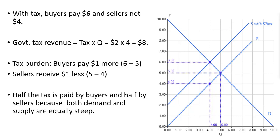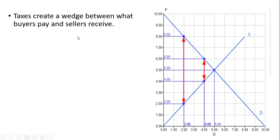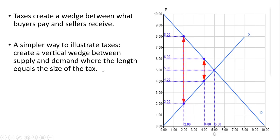Taxes create a wedge between what buyers pay and sellers receive. Just ignoring the shifted supply curve, we can see that with a $2 tax, buyers pay $6 and sellers receive $4. This is a simpler way to illustrate taxes: they create a vertical wedge between the supply and demand curves, where the length of that vertical wedge equals the size of the tax.